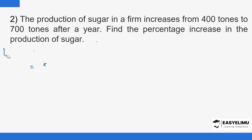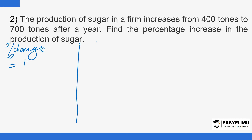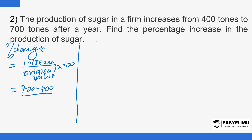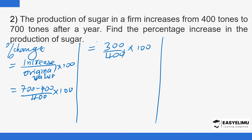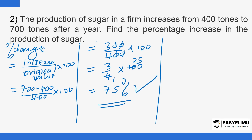Alternatively, use the formula directly. Percentage increase equals increase over original value times 100. The increase is 700 minus 400, over the original 400, times 100. That gives 300 over 400 times 100, which simplifies to 3 over 4 times 100. So 4 goes into 100 twenty-five times, and 25 times 3 is 75. Either way, you still get 75%.